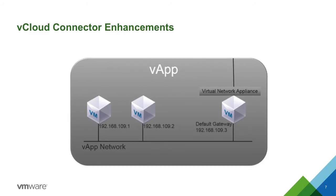Without lossless copy, each of these virtual machines could be assigned a different IP address when copied into the cloud. With the wrong networking assignments, this vApp would not work properly at all. You would have to go into each virtual machine and manually change the network settings to fix the problem. With lossless copy, all of the network assignments and firewall rules within the vApp are maintained during migration, making it easier to move the entire application without any manual configuration changes.